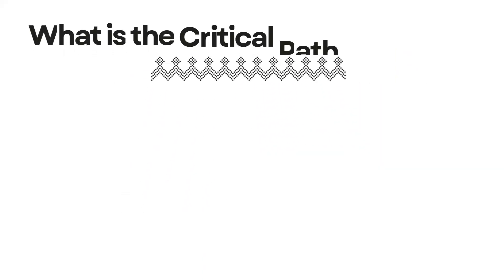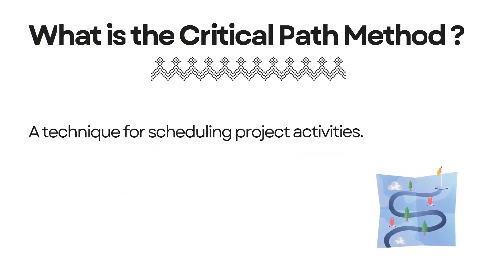First and foremost, what is the critical path method, sometimes shortened to CPM? It's simply a technique for scheduling project activities. Think of it as creating a roadmap that shows the longest path through your project — the sequence of activities that determines your project's minimum completion time.